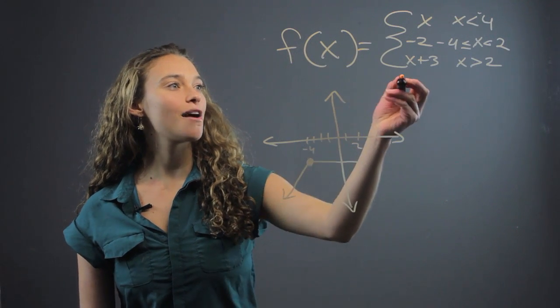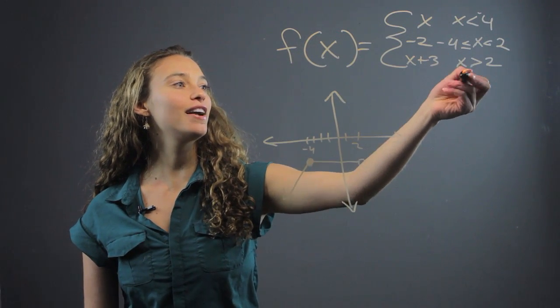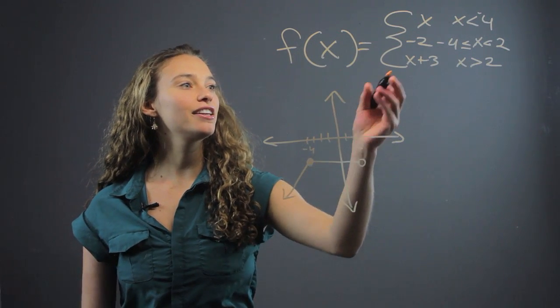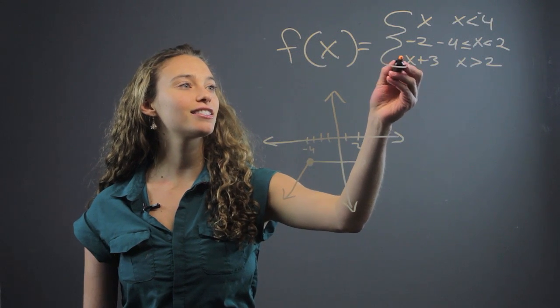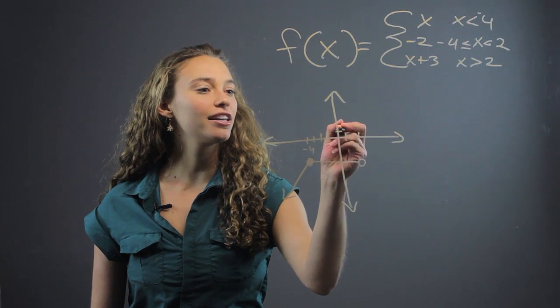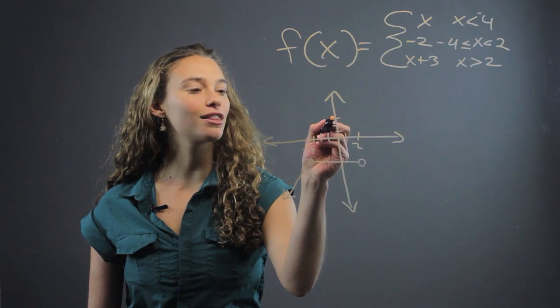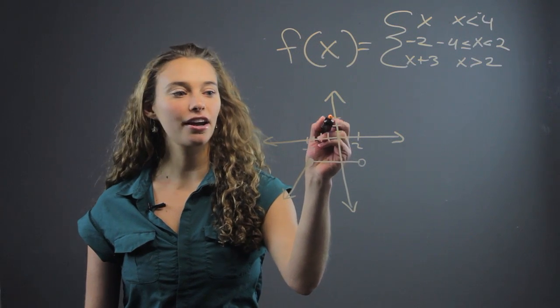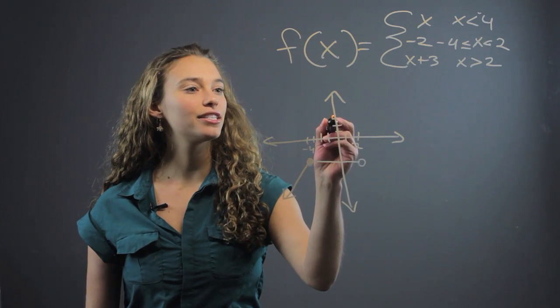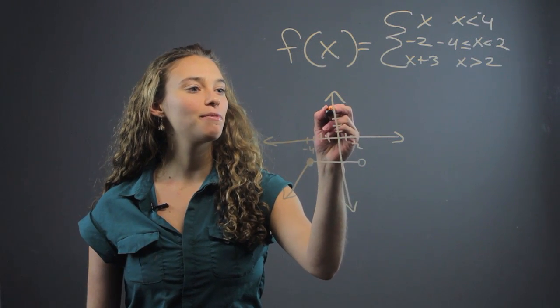Then for the third piece of our piecewise function, we have x is greater than two. When x is greater than two, it's going to be this line. So that line looks like it intersects at three, but we're not going to start it there. We're going to start it, it has a slope of one,